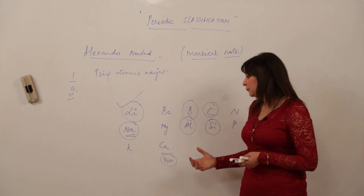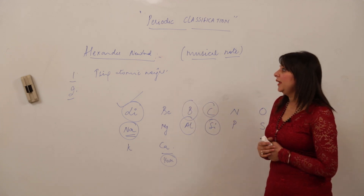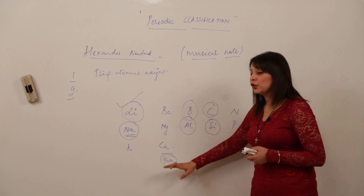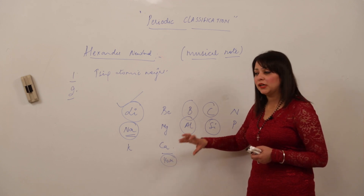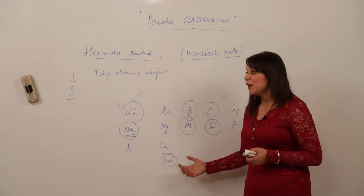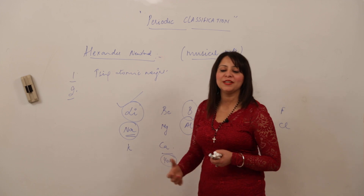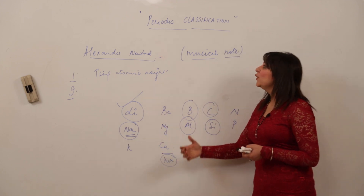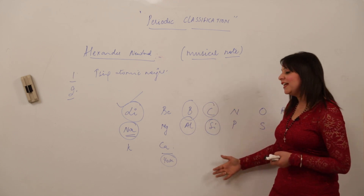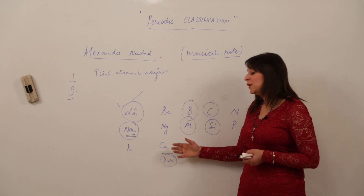Newlands' classification was discarded because he was only able to arrange lighter elements up to atomic mass 40 and could not arrange elements with higher atomic mass. The classification failed, but it was interesting because he was the first scientist to relate chemistry with music — though he ultimately failed to classify elements beyond calcium.